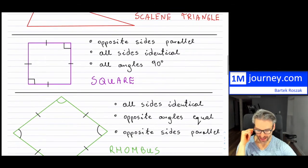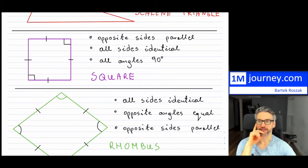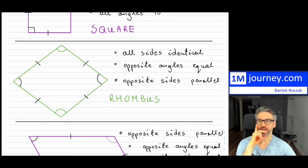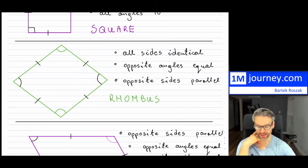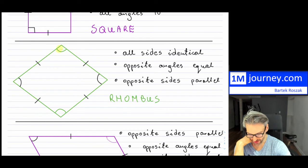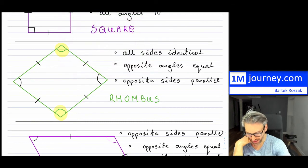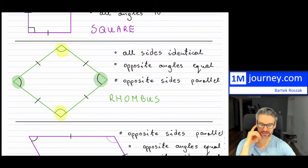In terms of quadrilaterals, the simplest one is the square: all angles are 90 degrees, all sides are the same, and the opposite sides are parallel to each other. The extension of the square is a rhombus, where all the sides are identical and the angles opposite each other are identical — but unlike a square, they're not 90 degrees. So you have two pairs of opposite equal angles, and that makes it a rhombus.